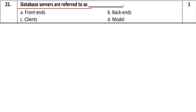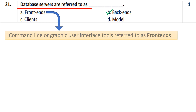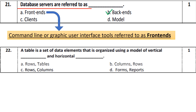Database servers are referred to as? Here there is one client and one server. The server is working on the back end, and the client is working on the front end. There is a graphic user interface tool which refers to the front end. If there is a graphic user interface, it works on the front end, and servers work on the back end. So option number B is correct.